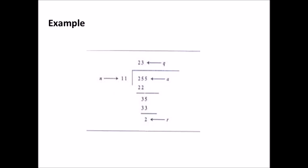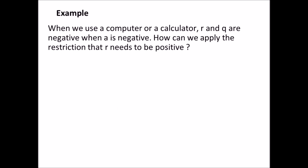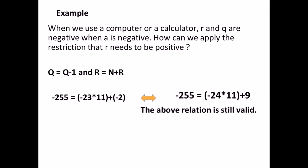For integer division we have two restrictions. First, the divisor must be a positive integer, that is N must be greater than 0. Second, the remainder must be a non-negative integer, that is R must be greater than or equal to 0. We now have a question: when we perform integer division, if A is negative, Q and R obtained are also negative. How can we preserve the restriction that R must be positive? The solution is simple: decrement the value of Q by 1 and add the value of N to R to make R positive. For instance, modifying the previous example as A equals minus 255, we get Q equals minus 23 and R equals minus 2. This violates the constraint R greater than or equal to 0. We decrement minus 23 to become minus 24 and add 11 to minus 2 to make it 9, which preserves the restriction on R.